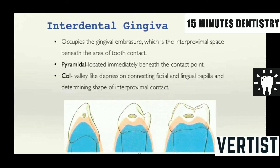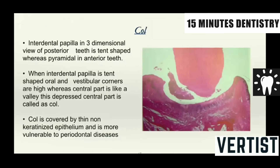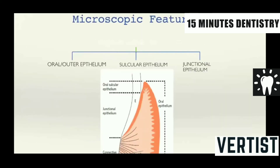The interdental gingiva is present between two teeth in the gingival embrasure and beneath the contact point of the two teeth. It is basically pyramidal in shape anteriorly, or tent-shaped in the posterior area. There is a structure called the col — a valley-like depression connecting the facial and lingual papillae. The interdental papilla three-dimensional view of posterior teeth is tent-shaped. The col is non-keratinized epithelium and is most vulnerable to periodontal diseases.